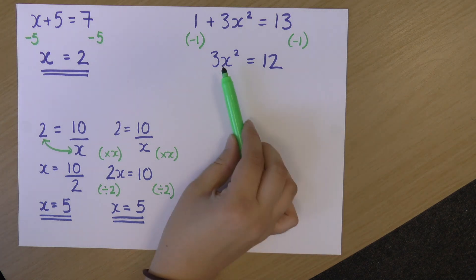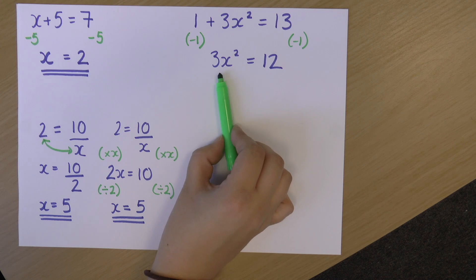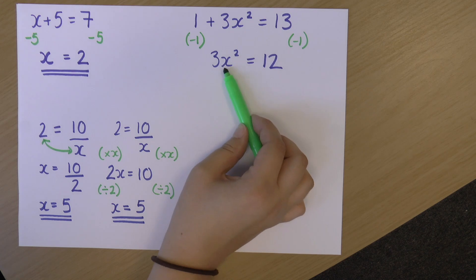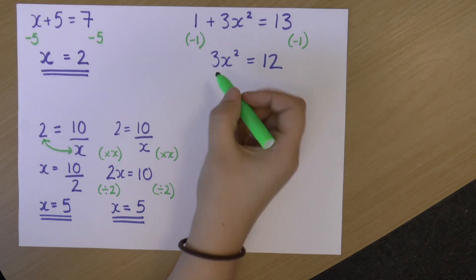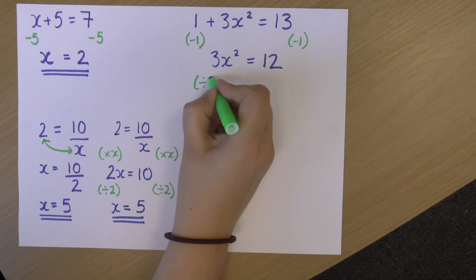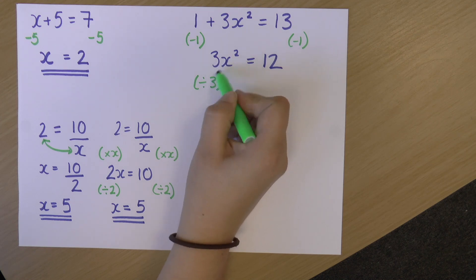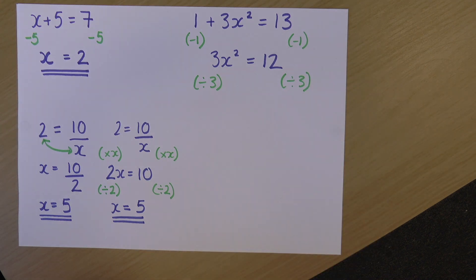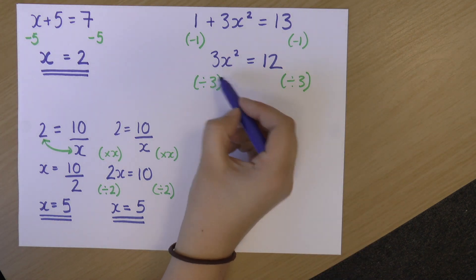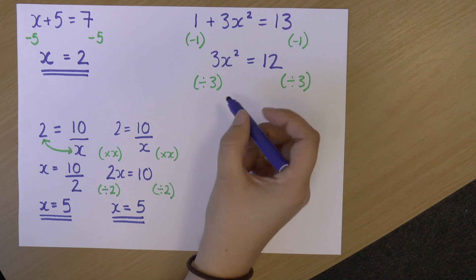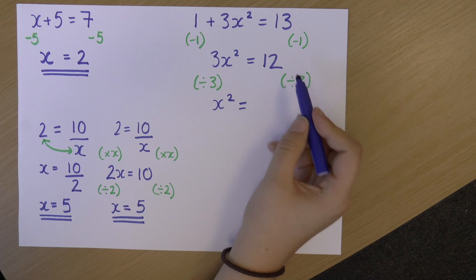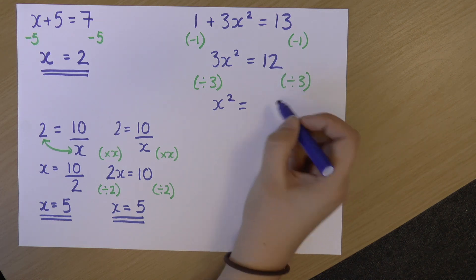Okay, so now on the left, I've got 3 times x squared, because remember, that's what this means. And on the right, I've got 12. Now, my goal is to get x on its own. So the next thing I'm going to do is I'm going to divide by 3. Because this is a 3 times, therefore, I can divide. So I'm dividing both sides by 3. And that gives me on the left, 3x squared divided by 3, which is x squared. And on the right, 12 divided by 3, which is 4.